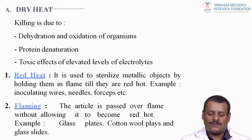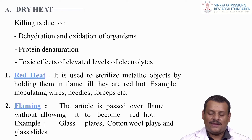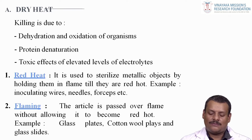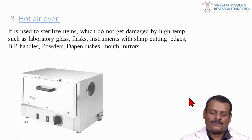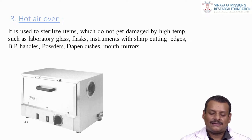Red heat is used to sterilize metallic objects by holding them in a flame until they are red hot; examples include inoculating wires, needles and forceps. In flaming, the article is passed over a flame without allowing it to become red hot; examples include glass plates, cotton wool, and glass slides. The hot air oven is used to sterilize items which do not get damaged by high temperature, such as laboratory glassware, flasks, instruments with sharp cutting edges, BP handles, powders, Petri dishes, and mouth mirrors.